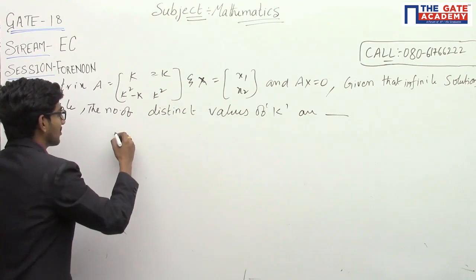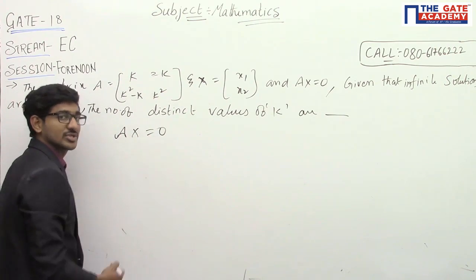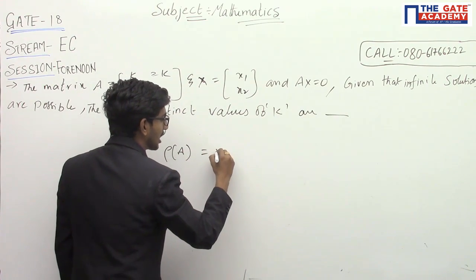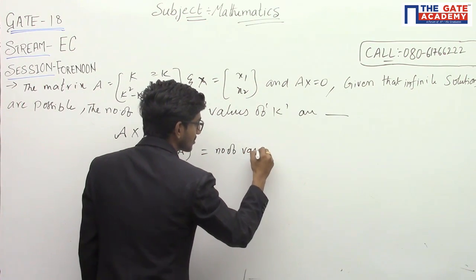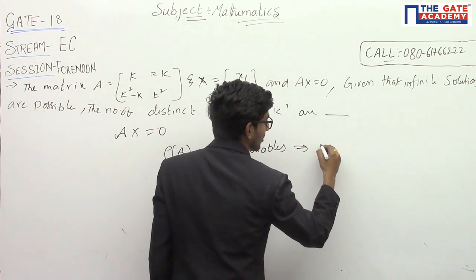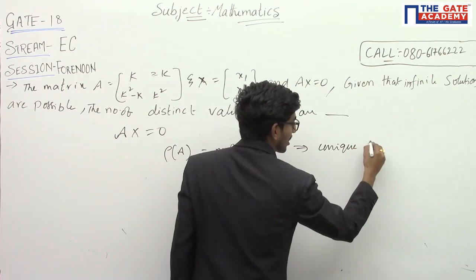We all know that for homogeneous equations, Ax is equal to 0. Condition is what? Rank of A equal to number of variables. Then, the system of equations have unique solution.